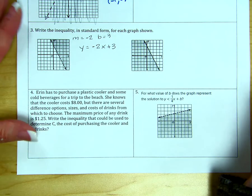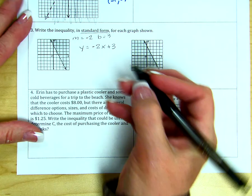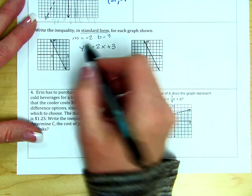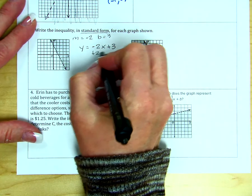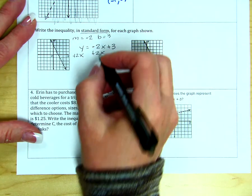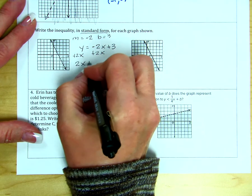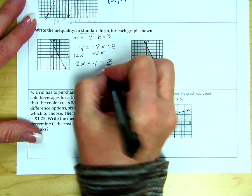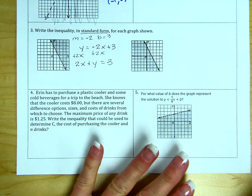But they didn't ask for slope-intercept form. They asked for standard form. That means that the x term and the y term need to be on the same side. So we'll just get rid of this negative 2x over there by adding 2x to both sides. And there we have our equation in standard form.